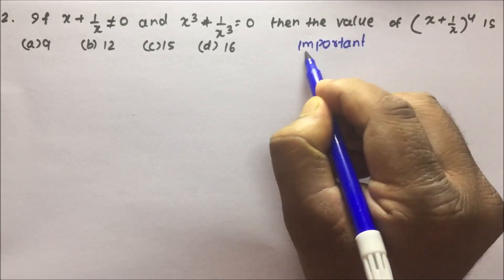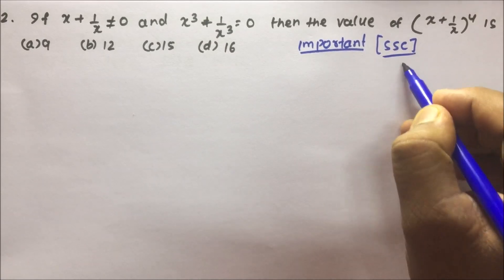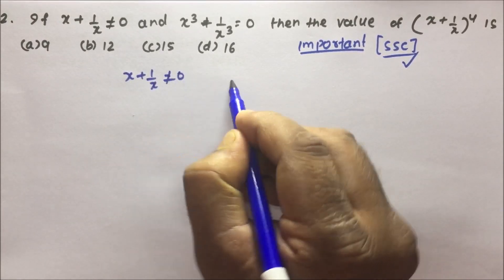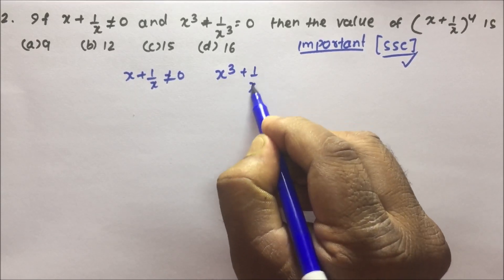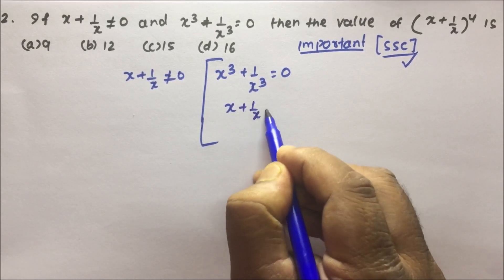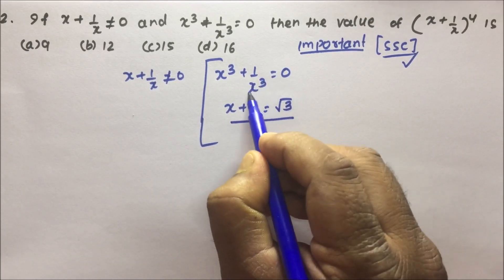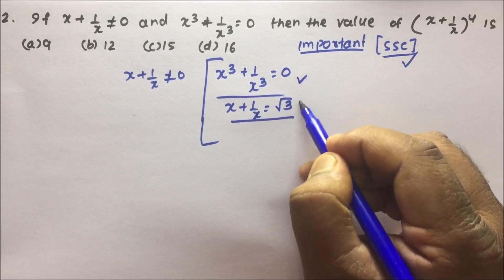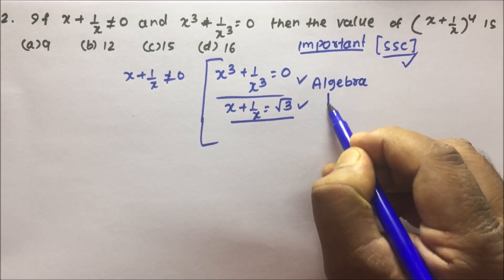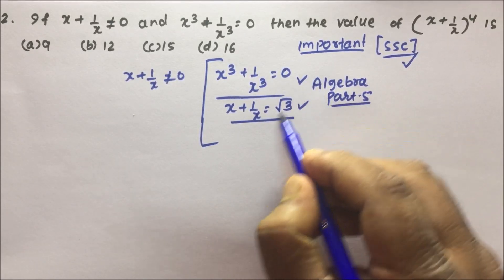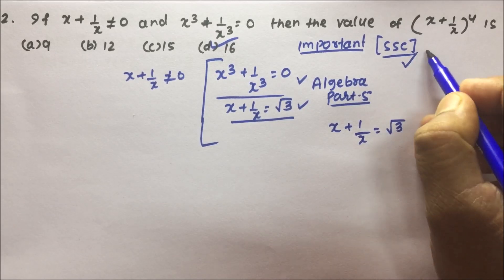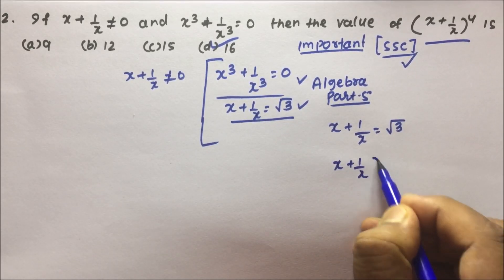Now question number 2 is an important problem. All the problems we are doing as part of algebra are SSC problems — they have all been asked in the SSC examination. The question states: x + 1/x is not equal to 0, and x³ + 1/x³ equals 0. Recall that if x + 1/x = √3, then x³ + 1/x³ = 0, as proved in algebra part 5. So here x + 1/x = √3.